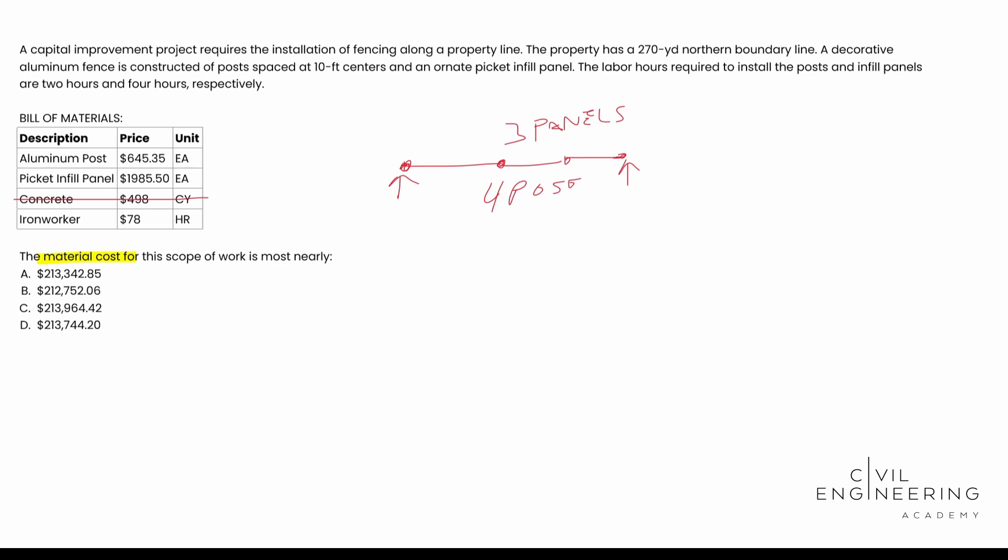It says 270 yards and it's a straight line. We're going to go ahead and assume it's a straight line because it doesn't really give us any radiuses or anything crazy like that. So we're going to go ahead and go 270 yards. And since it's given us 10 foot centers, we could do this either way. We could convert feet to yards or yards to feet. In this case, we're going to convert yards to feet. So we need to multiply that by three feet per yard, right?